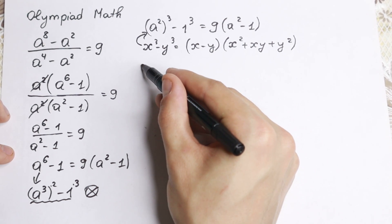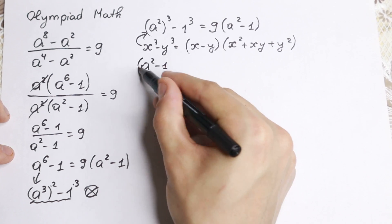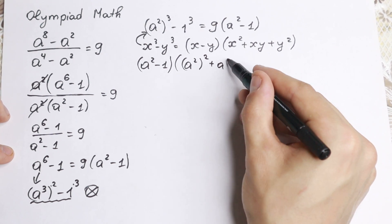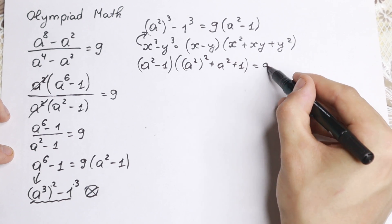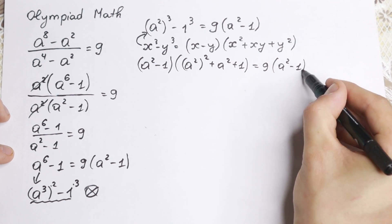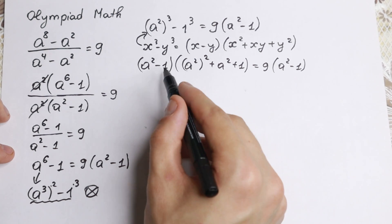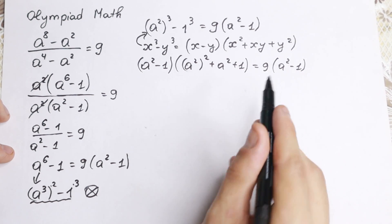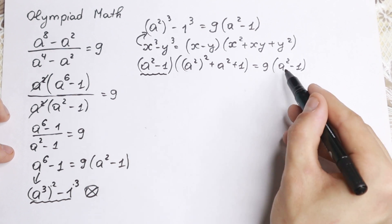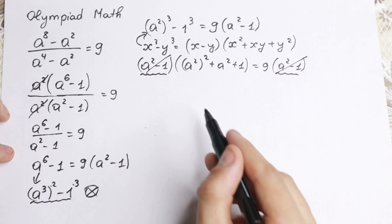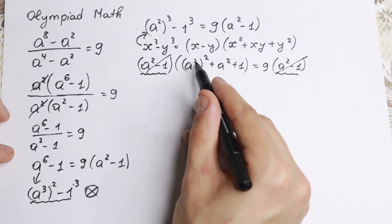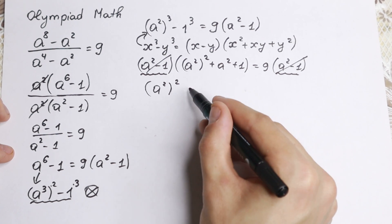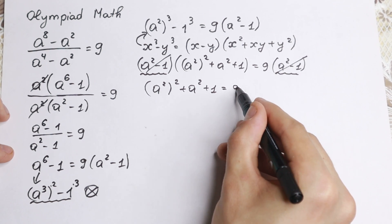We get a squared minus 1, times a squared squared plus a squared plus 1, equal to 9 times a squared minus 1. If you look closely, we have a squared minus 1 on both sides as a product, so we can easily cancel those parentheses. What we have right now is a squared squared plus a squared plus 1 equal to 9.